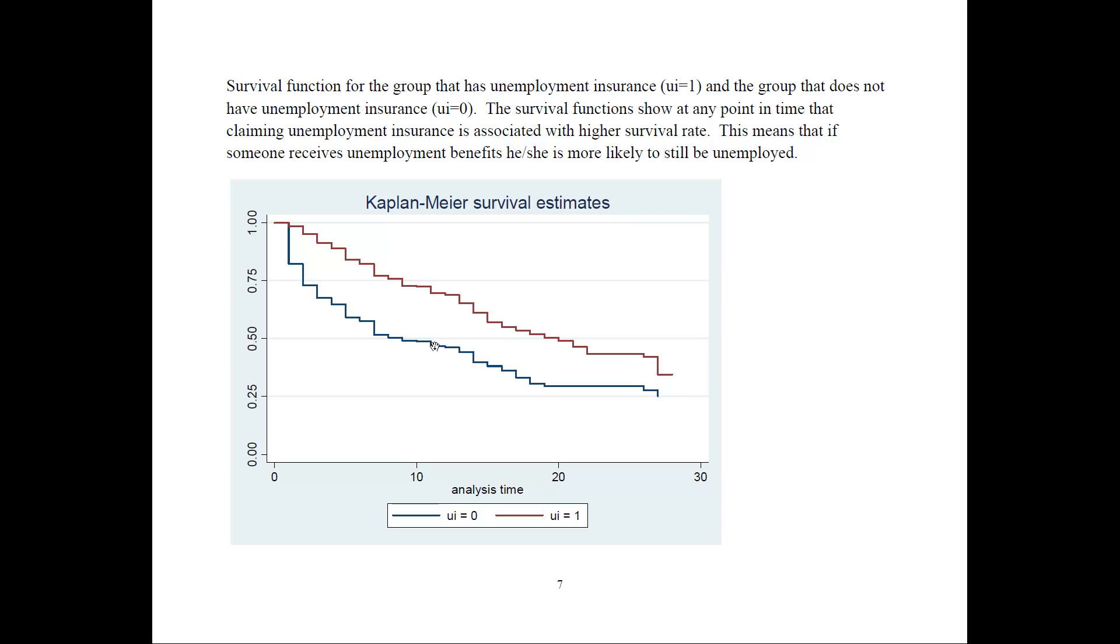What does that mean? See, for, say, for period number 10, those that have unemployment insurance are, say, 70% likely to still be surviving and be unemployed.